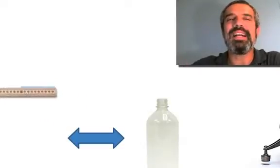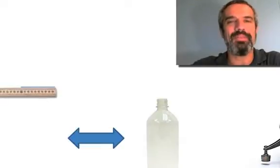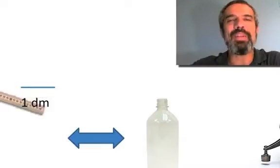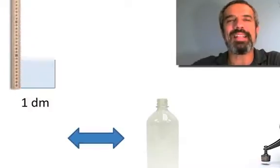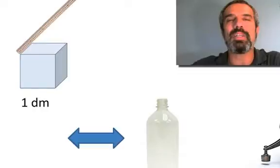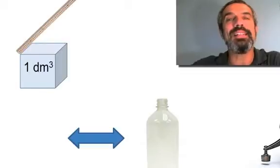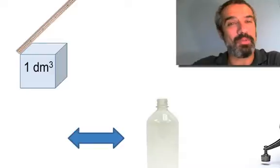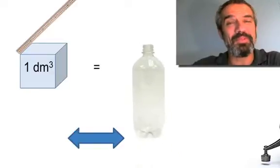If we take a tenth of a meter, now that's often called a decimeter, and we take a box that is exactly that size, one decimeter by one decimeter by one decimeter. In other words, it's a cubic decimeter. You got that? You know what you've got? You've got a liter.